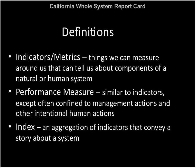I'll start with some basic definitions. When I use the terms indicators and metrics, I mean something that we can measure around us that tells us something about the condition of a natural system or a human system. When I use the term performance measure, it's similar in meaning to indicators, but I'm applying it to management actions or other human activities such as restoration. The term index means an aggregation of indicators — some kind of aggregation, such as an average or sum, that conveys an overall story about a system.